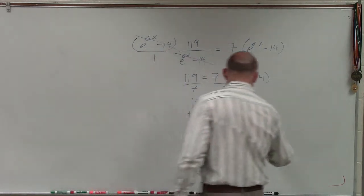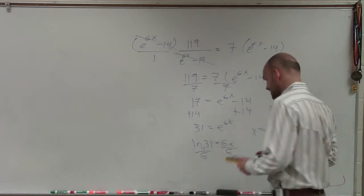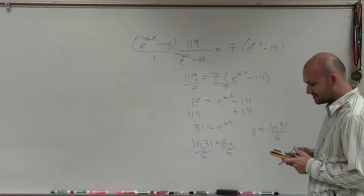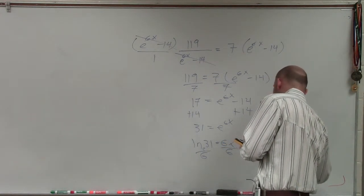So now to determine my equation, which would be x equals ln of 31 divided by 6. So I do ln 31, use my parentheses, divide by 6. So therefore, x equals approximately 0.57.